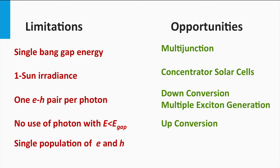The problem of the non-use of photons below the bandgap can be tackled with a spectral conversion approach as well. Here the same low-energetic photons, which are transmitted through the solar cell, are converted into one photon with an energy above that of the bandgap of the semiconductor material. If this photon is reflected back into the material, it can be absorbed.